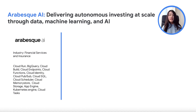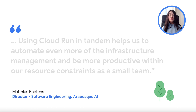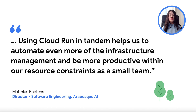And if we wanted to take a look at a real-life example, we have Arabesque AI. Arabesque AI provides AI-driven asset management, and amongst other incredible results, they were able to reduce their server costs with Cloud Run. Not only that, they were also able to automate infrastructure management, resulting in higher productivity.